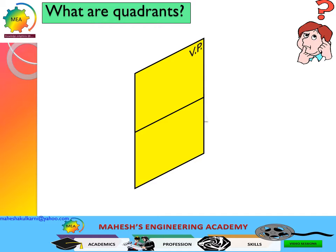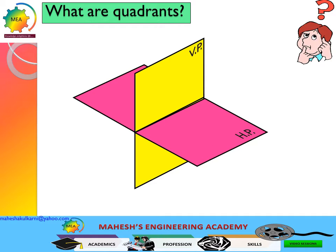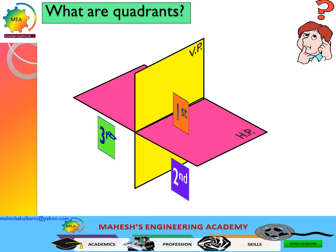What are quadrants? Consider the vertical plane and horizontal plane. Above the horizontal plane and in front of the vertical plane is known as the first quadrant. Below the horizontal plane and in front of the vertical plane is known as the second quadrant. Behind the vertical plane and below the horizontal plane is known as the third quadrant. Behind the vertical plane and above the horizontal plane is known as the fourth quadrant. The object will be placed in these quadrants when different types of projections are taken.